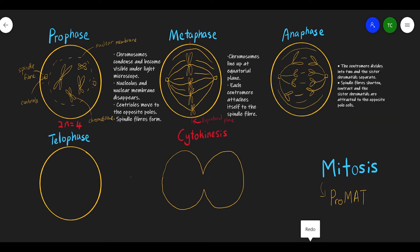In anaphase, the centromere divides into two and the sister chromatids separate — half to the left and half to the right. The spindle fiber will shorten and contract so that it can pull the chromatids to the left and right sides of the cell.